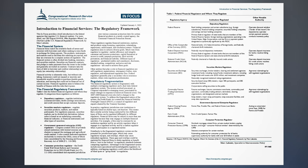Regulatory Fragmentation. The financial regulatory system is fragmented, with multiple overlapping regulators and a dual state-federal regulatory system. The system evolved piecemeal as Congress responded to emerging issues, punctuated by major changes in response to historical financial crises. The 2007–2009 financial crisis also led to changes to the regulatory system. To address the fragmented nature of the system, the Dodd-Frank Act created the Financial Stability Oversight Council (FSOC), a council of regulators and experts chaired by the Treasury Secretary. In practice, regulatory jurisdiction over institutions is typically based on charter type, not function. This means that a similar activity conducted by two different types of firms can be regulated differently by different regulators.